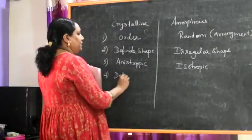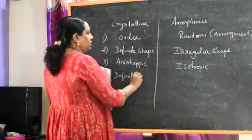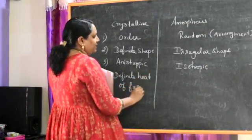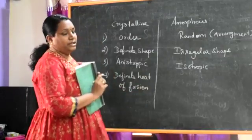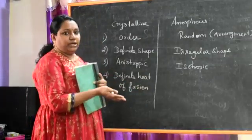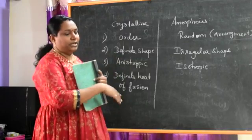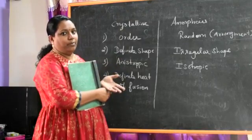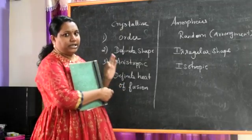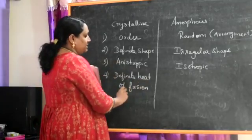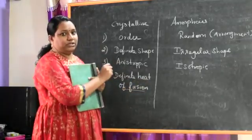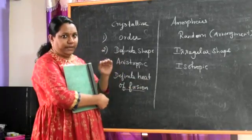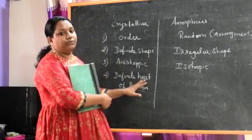The fourth difference is definite heat of fusion. For example, if we take an ice cube from the fridge at 0 degrees Celsius and bring it to atmospheric temperature, it will melt. The temperature at which it melts — 100 degrees Celsius — is called the heat of fusion. Crystalline solids have a definite heat of fusion value, but amorphous solids have no definite heat of fusion value.